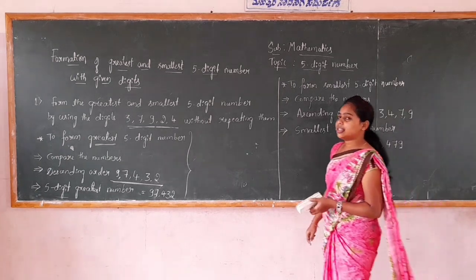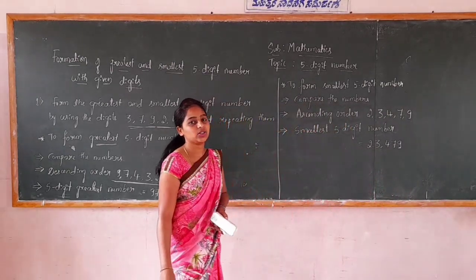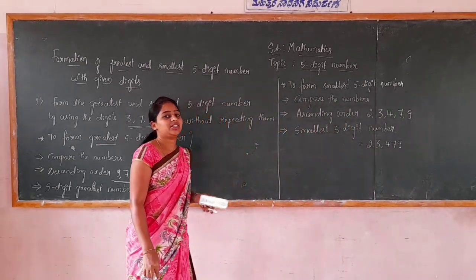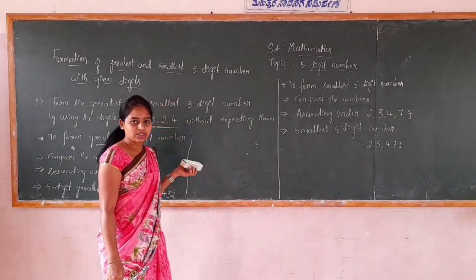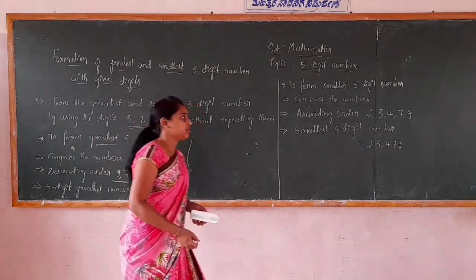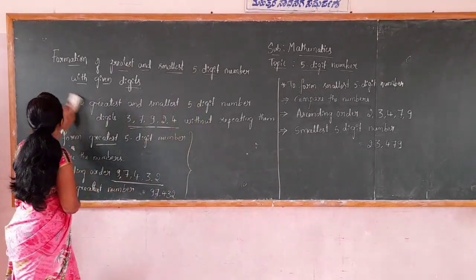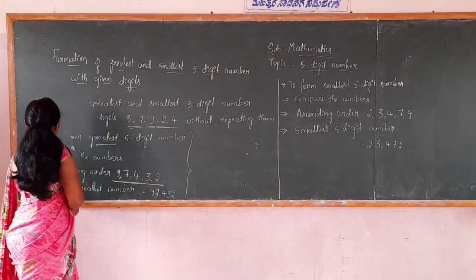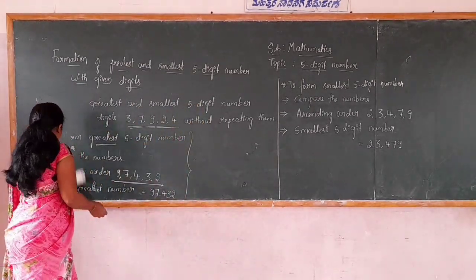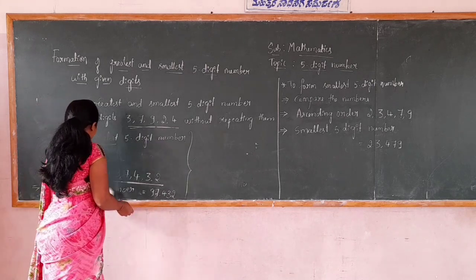This is the formation of the greatest and smallest 5-digit number using the given digits. Next, we move on to the formation of the smallest 5-digit number when one of the digits is 0.